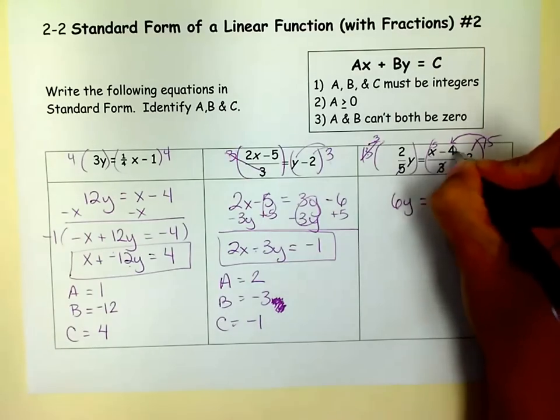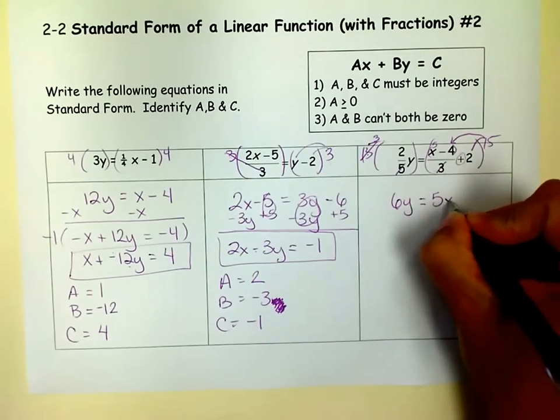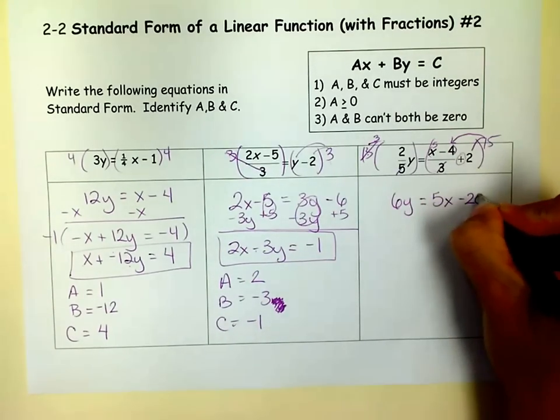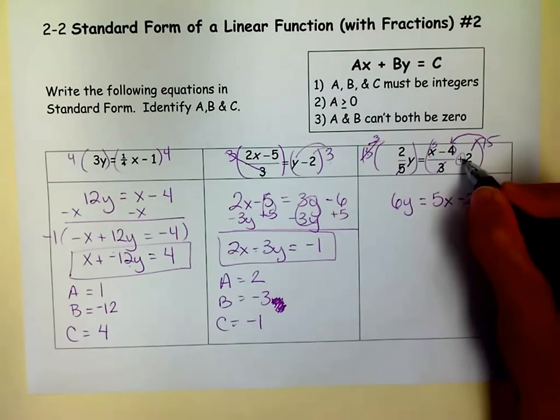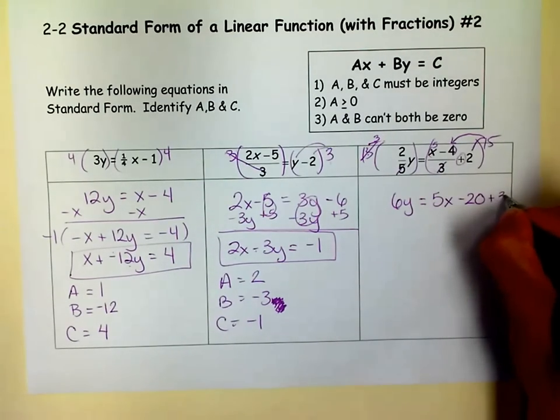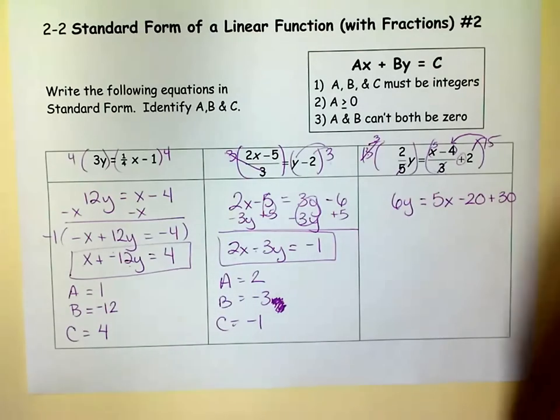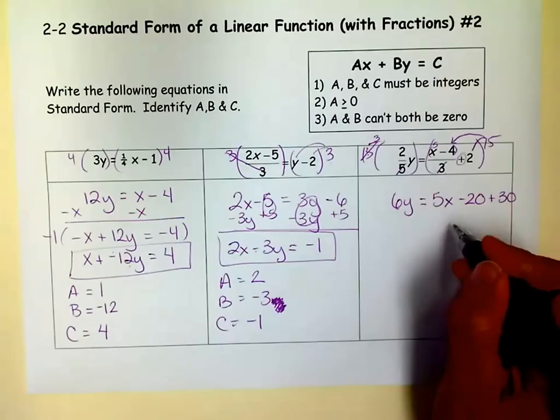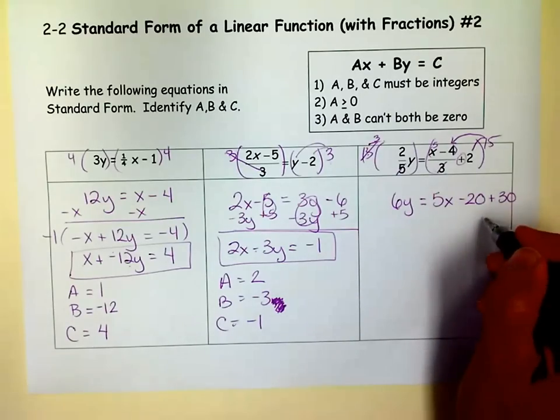So the 3 goes into 15 five times. So I actually end up multiplying this by 5. So we get 5x minus 20. And then 15 times this guy is 30. 15 times 2 is 30. So we can combine these. That's 10.